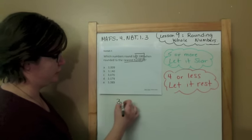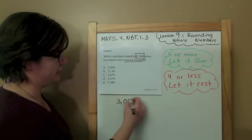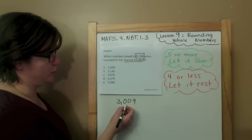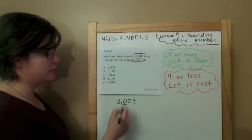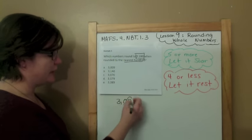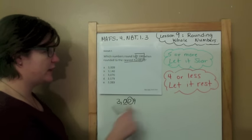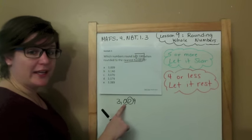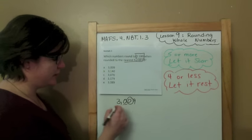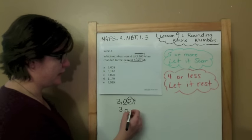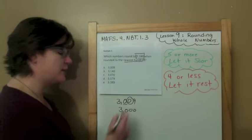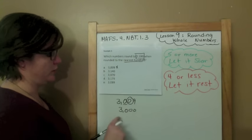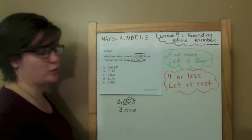I'm going to start with 3,009. It says the nearest hundred. So when you round, underline the place. Spotlight to the right — decide the digit's fate. Four or less, you better let it rest. Drop it down and everything else becomes zeros. No, 3,000 is not 3,100.